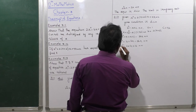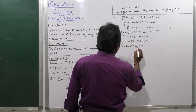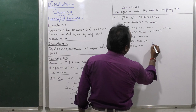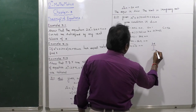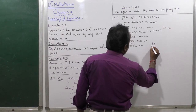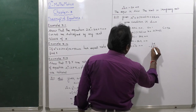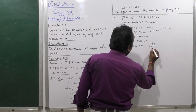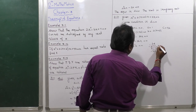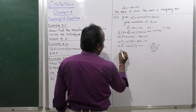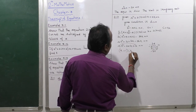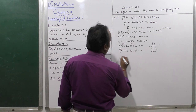This is a quadratic equation in k. Multiplying the coefficient of k squared by the constant gives 64. We need factors of 64 whose sum is 20. Using the factoring method and dividing through by 4, we get k minus 1 into k minus 4 equals 0.